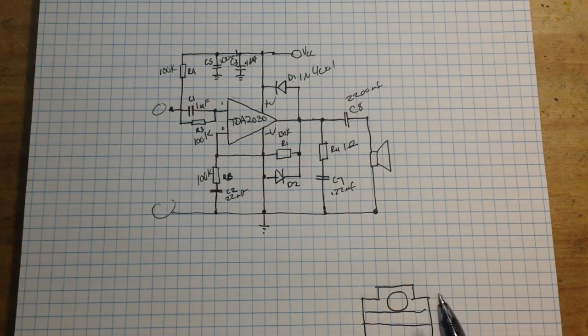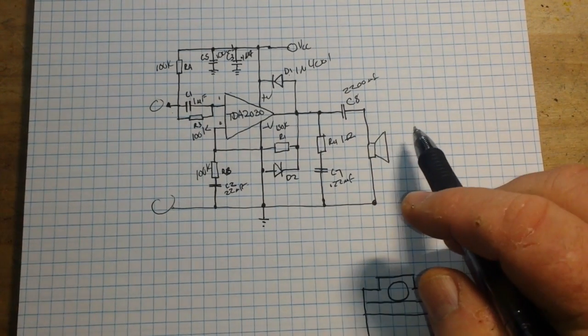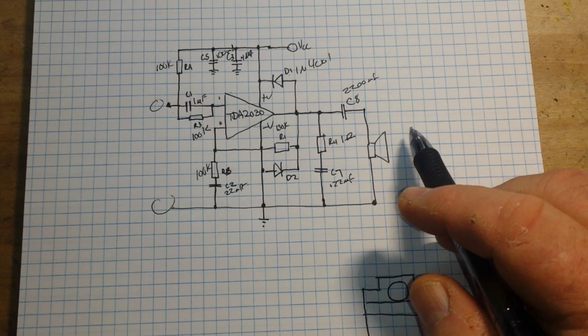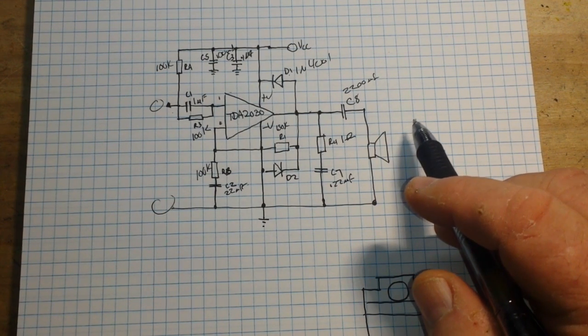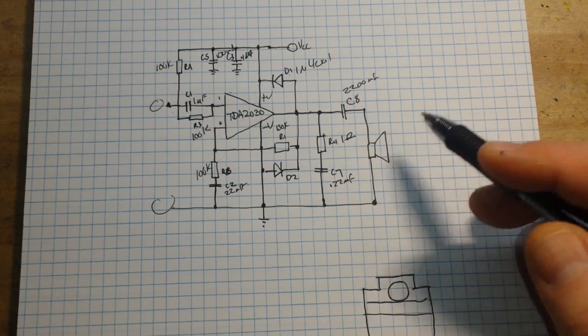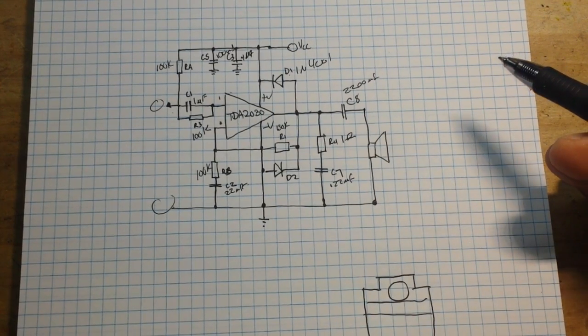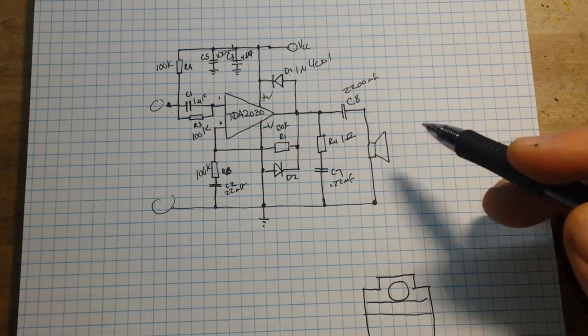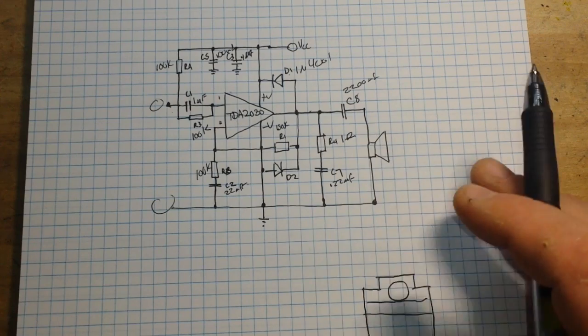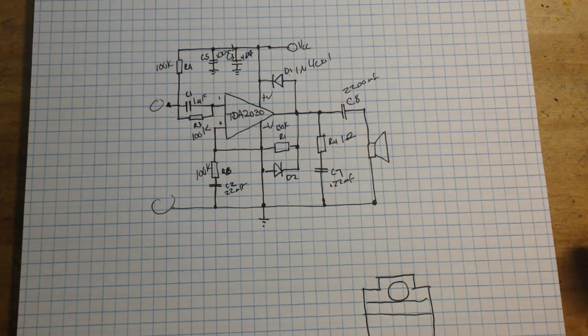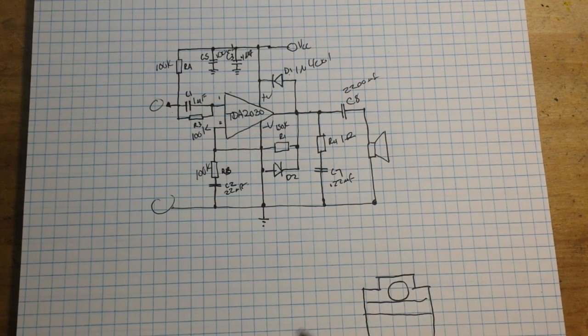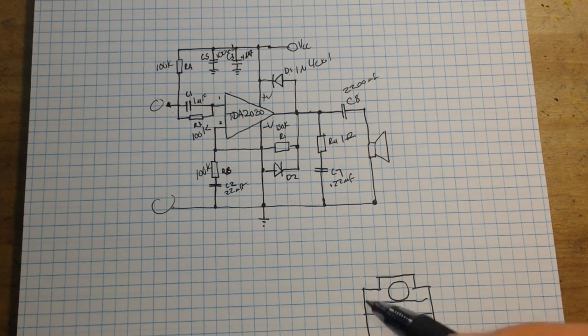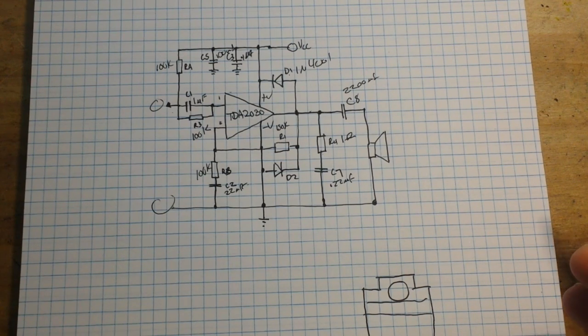Now if you put a four ohm speaker on, you're going to get one thing. If you put eight ohms on, you're going to get a different thing. That will affect the gain, that will affect the power output, because Ohm's law—you change the resistance, in this case impedance, then it affects both your voltage and your current as well.